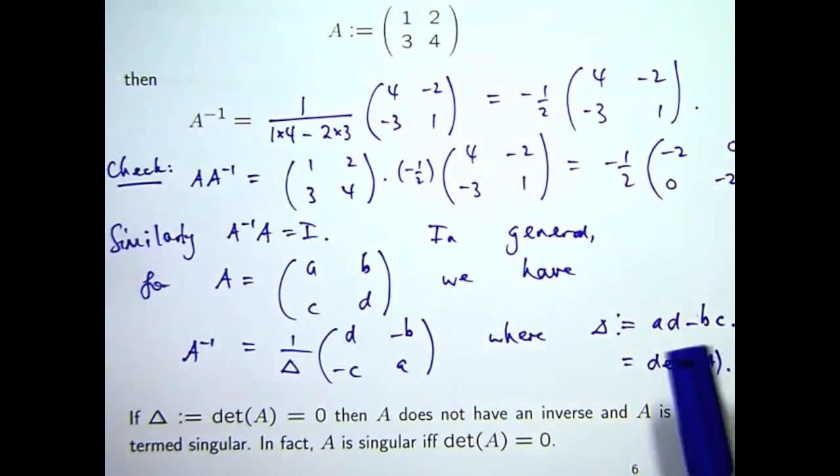So sometimes you write this as a delta or a little triangle. Sometimes it's det, determinant of A.